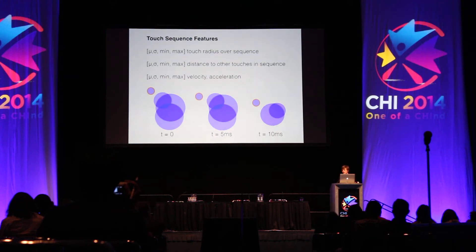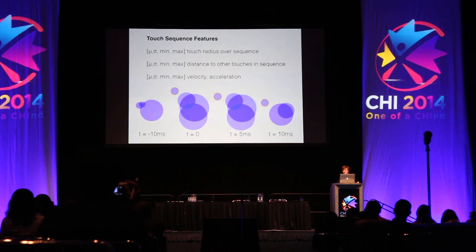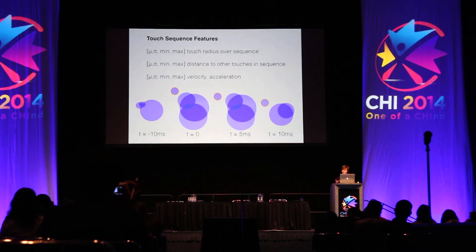You can also get things like velocity and acceleration. One interesting finding is that you can do even better by looking at touches on the screen slightly before the touch occurred, because due to flickering palm touches, when your initial touch down occurs, you might not have any palms on screen, so looking back provides more information.